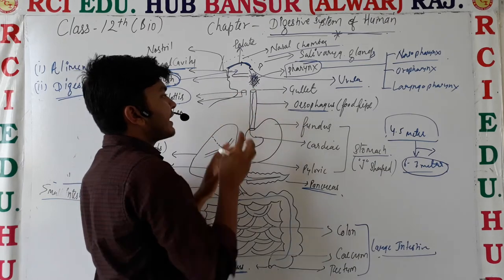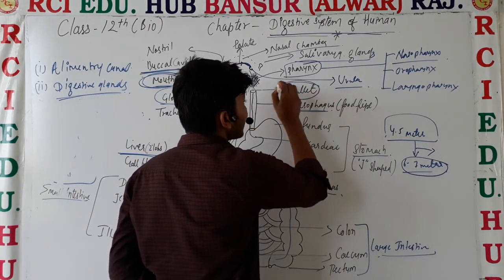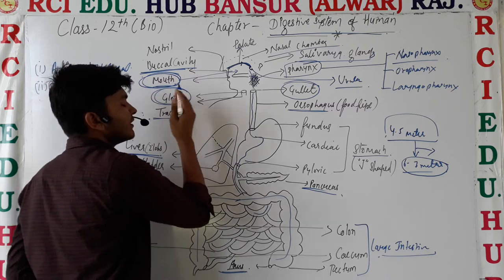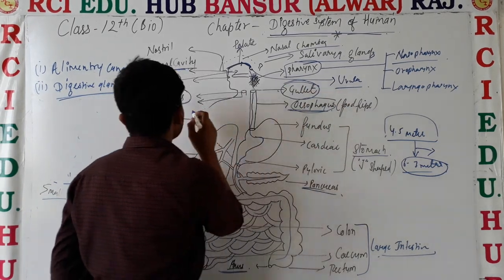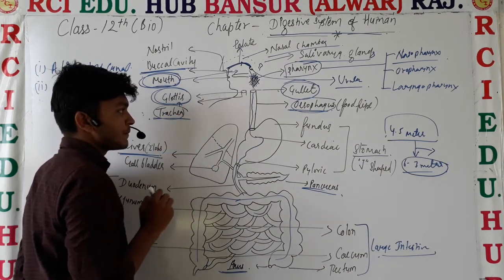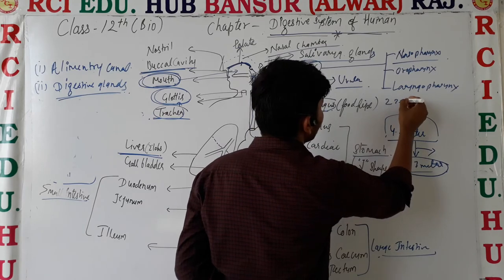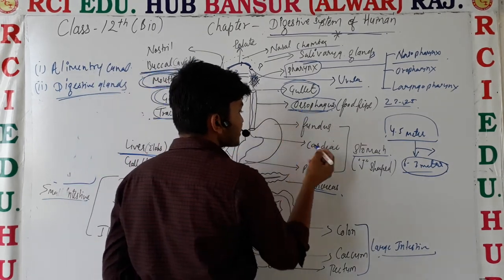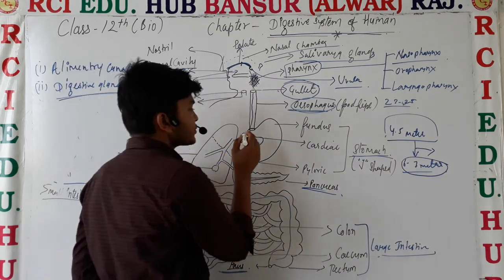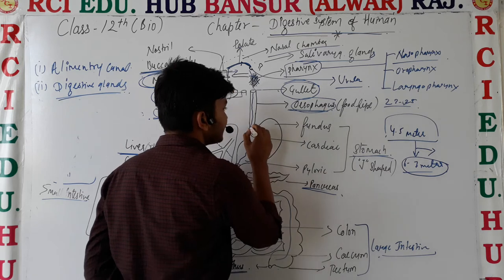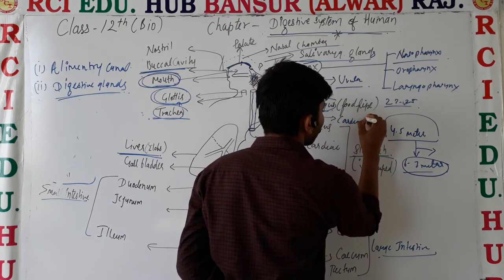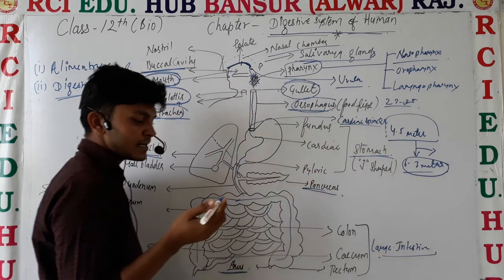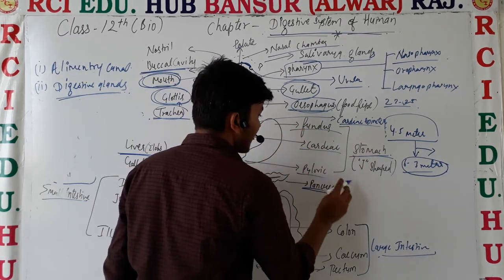From the laryngopharynx, the esophagus begins. The esophagus is a 22 to 25 cm long muscular tube. It passes alongside the trachea and connects the pharynx to the stomach.